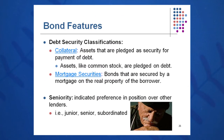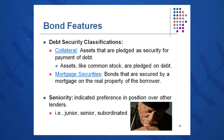Some other terminology: collateral are assets that are placed to back the bond in case something would happen to the company. Perhaps buildings are put up as collateral — you could sell those assets and get some cash and pay back your bondholders. Mortgage securities are bonds that are secured by a mortgage on the property of the borrower. Seniority refers to junior bonds and senior bonds, indicating who gets paid first in case of default.